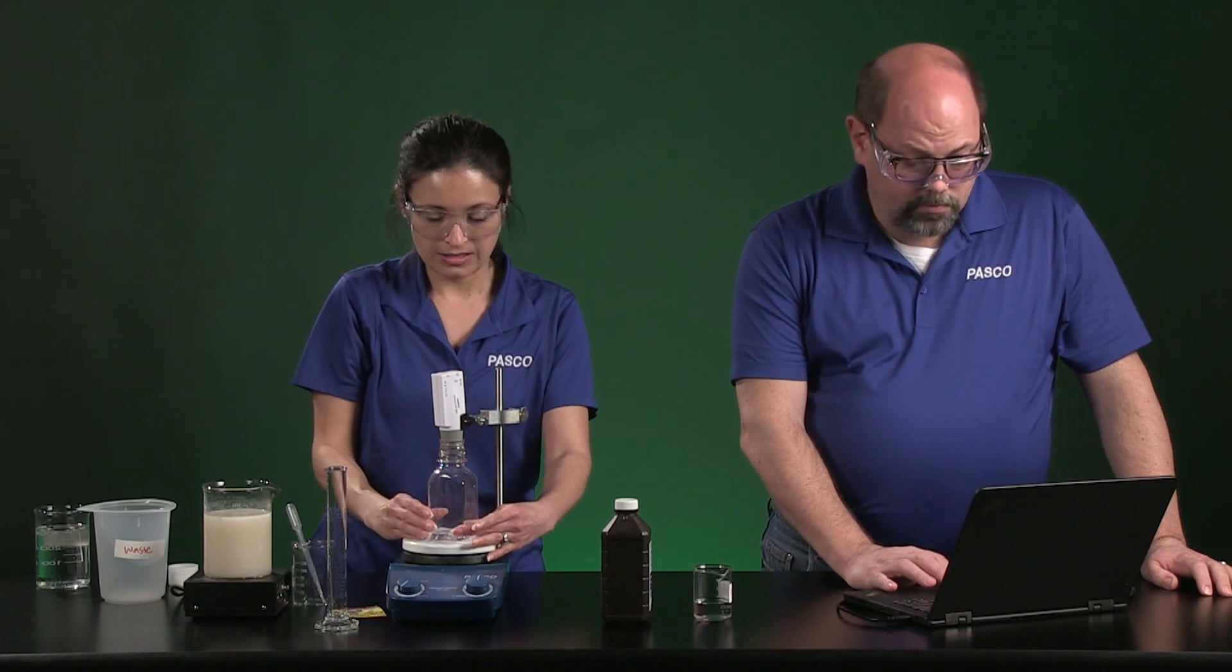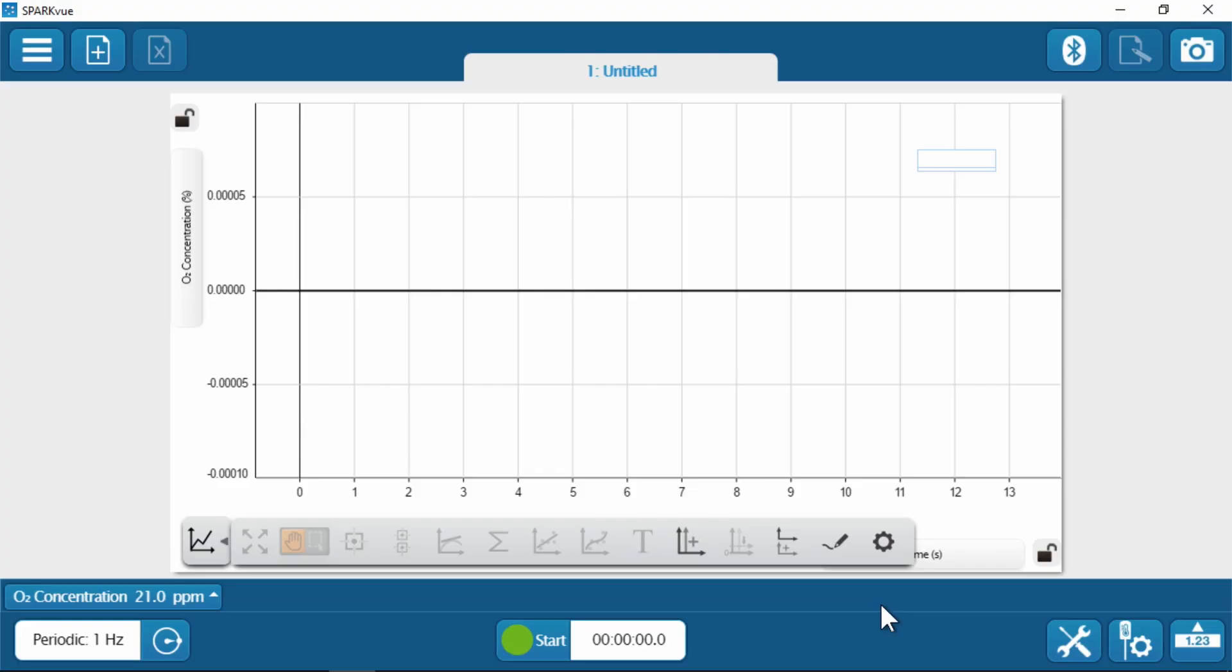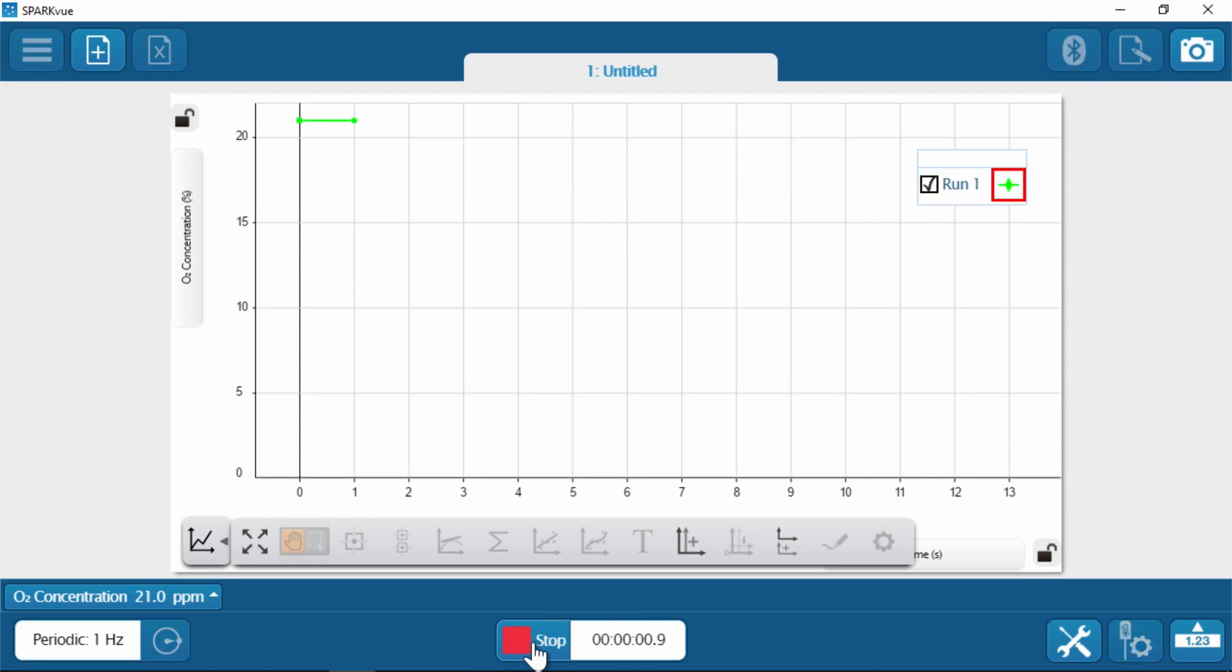So now that it's stirring, what I'm going to do is go over to my SparkView software and we will start that up. I've already taken the time to calibrate it through the live data view here in the bottom left. I'm just ready to start measuring. So here we go. And how long will we measure this? Three minutes is good.